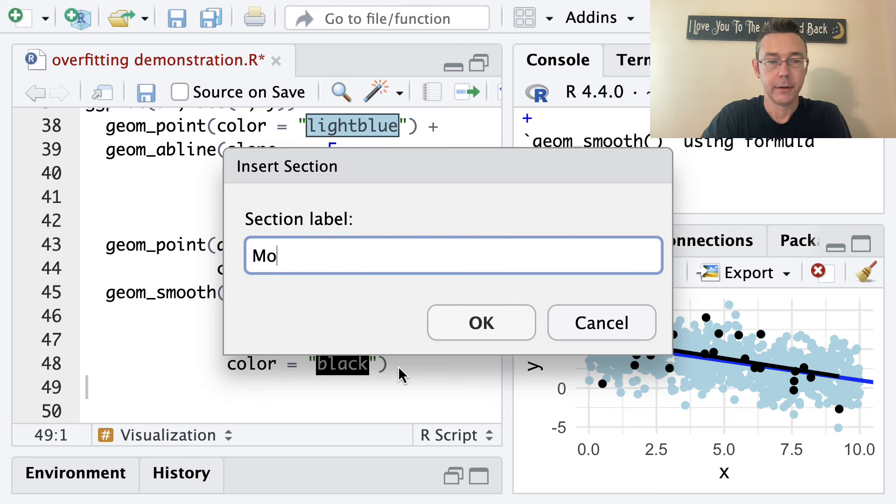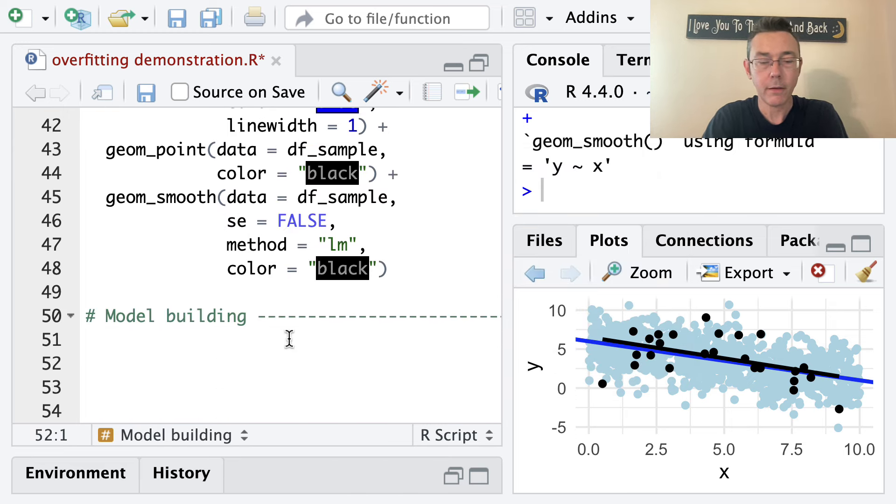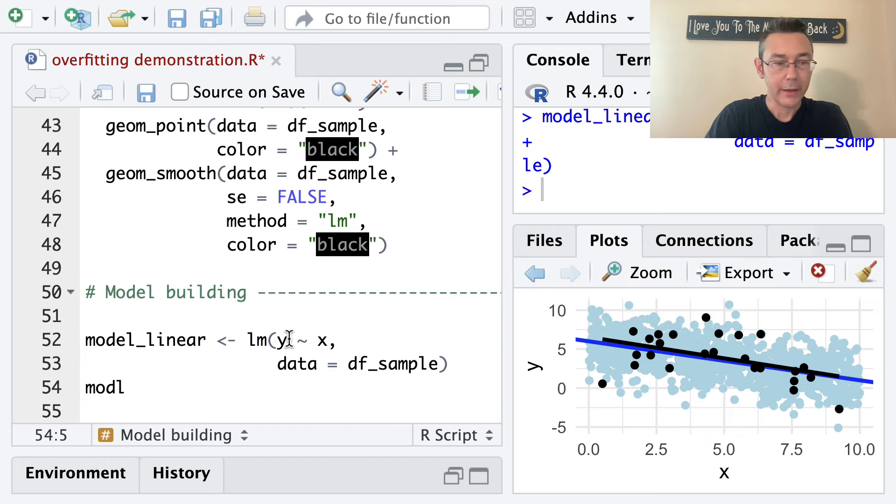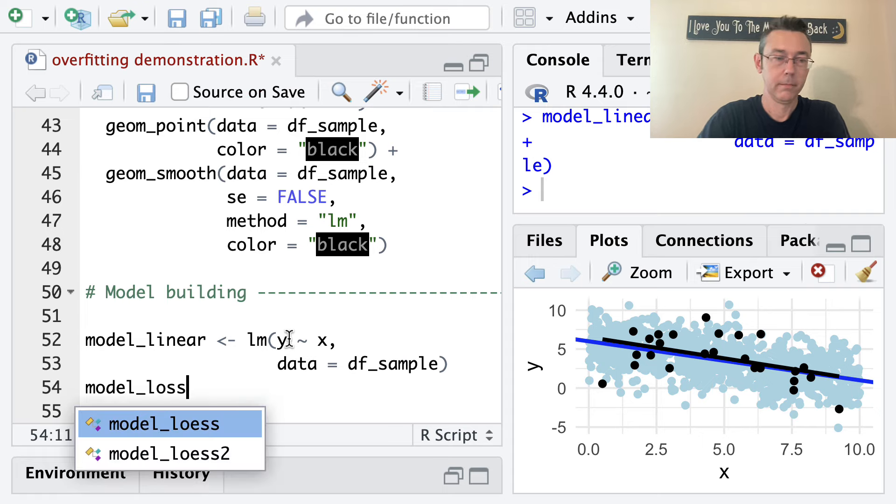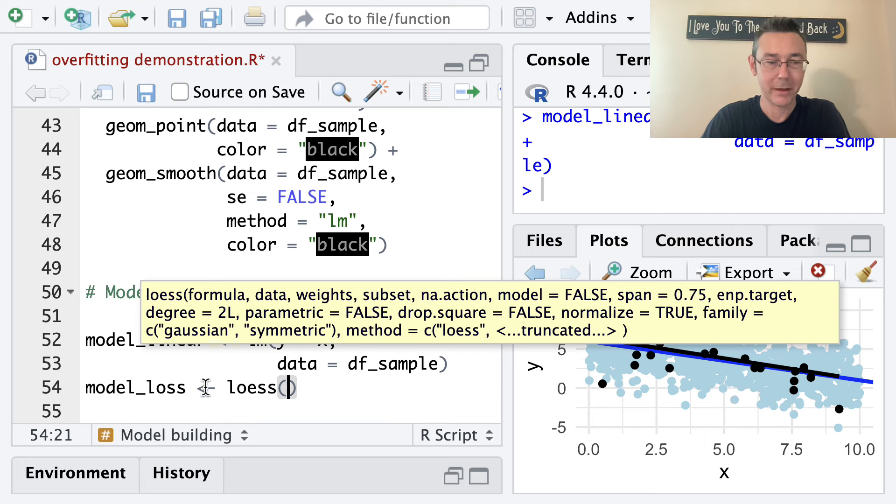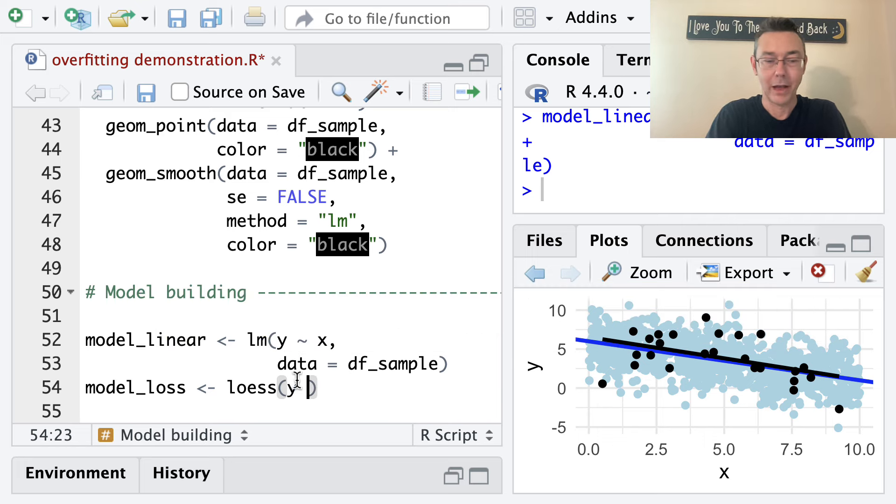So let's call this model building. And I'm going to make two models. First, let's get a linear model. And so we're going to do that using LM, y is explained by x, and the data should be df_sample. And then I'll get model_loess, really just exactly the same way, except now I'm using the loess modeling function. So y is explained by x. And the data, again, is df_sample.